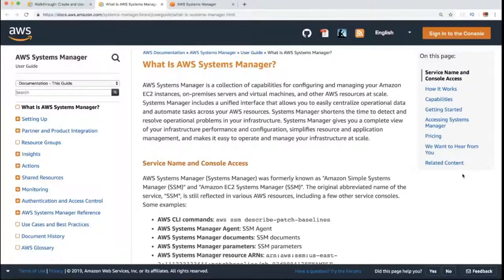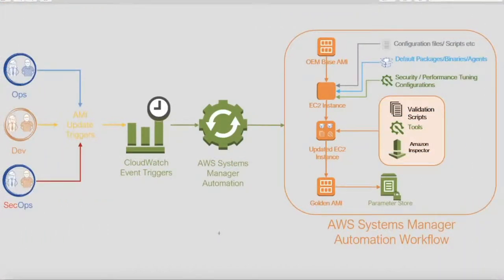Hi friends, in this video we will look at AWS System Manager. AWS System Manager is used to configure and manage a collection of EC2 instances. It is a very useful AWS service — for example, if you have 100 EC2 instances in a shopping website application, AWS System Manager helps you manage them all.